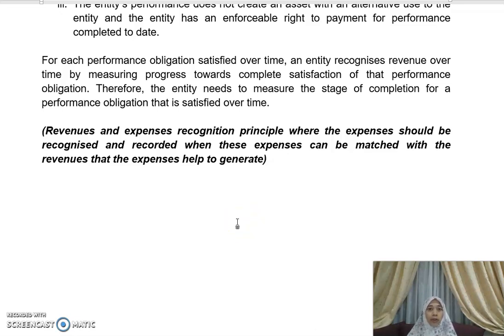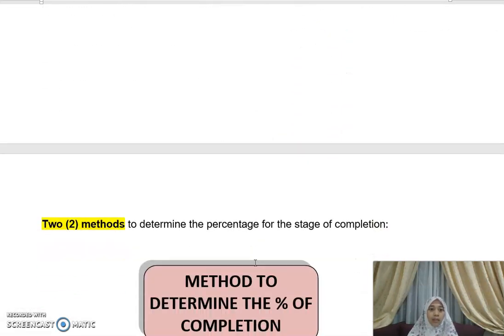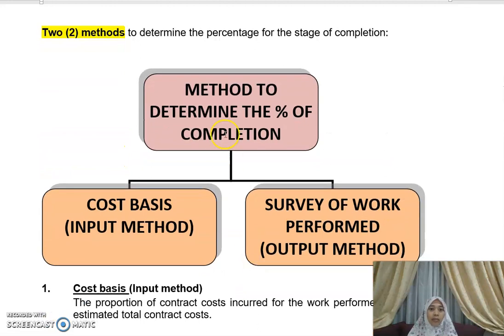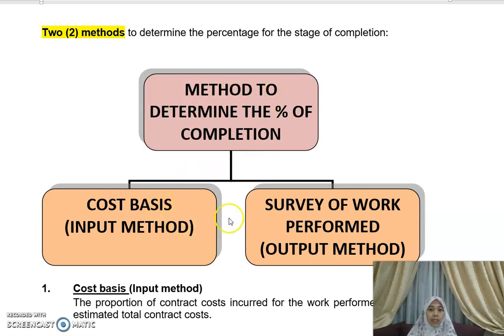To determine the stage of completion, there are two methods. The first is the input method, also known as the cost basis. The second is the output method, based on the survey of work performed. So to summarize: one method is cost basis or input basis, and the other is survey of work performed or output basis.